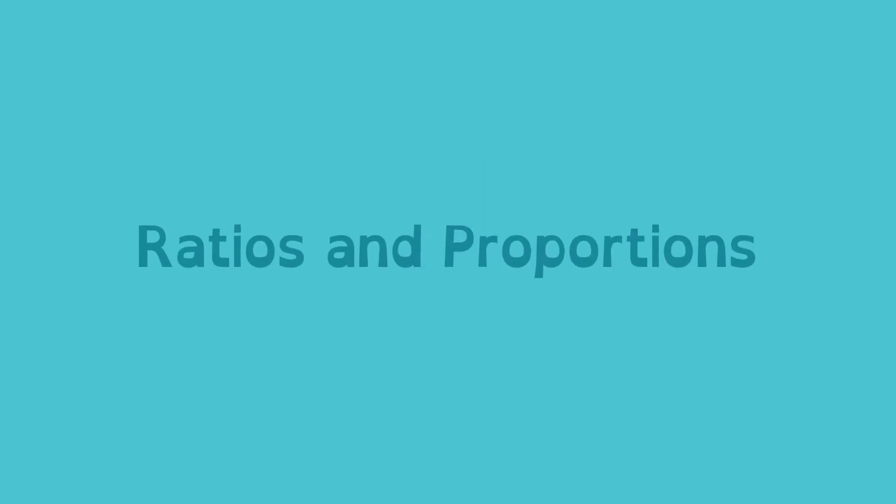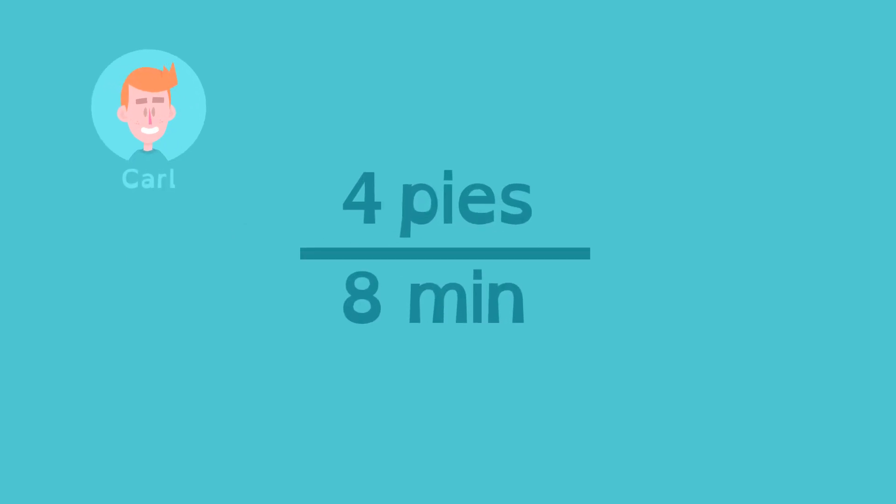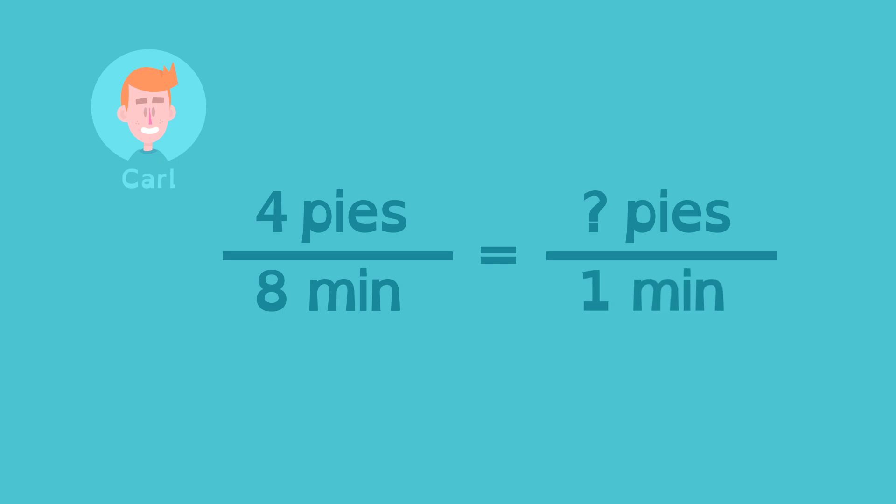Ratios and proportions show us the math behind unit rate. If Carl eats four pies in eight minutes, how many pies would he eat in one minute? In other words, what is his unit rate?